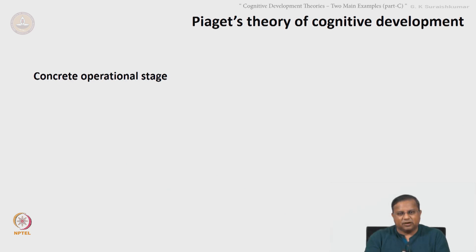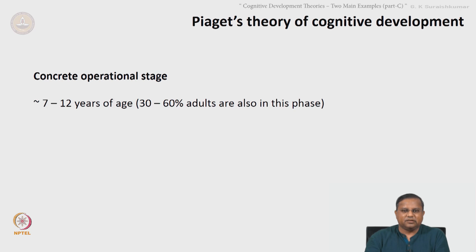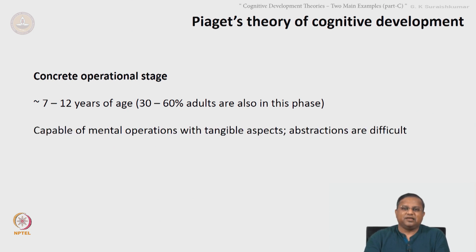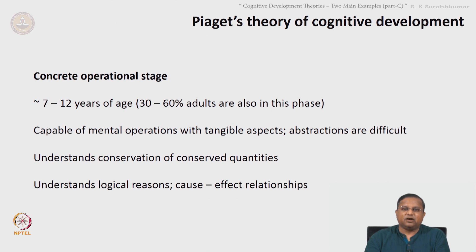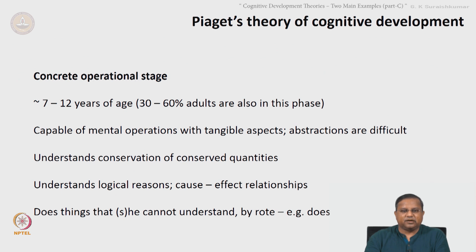The concrete operational stage is a little more relevant to us — the first two were for completeness. This is seven to twelve years of age, and thirty to sixty percent of adults are also in this phase. In this stage, they are capable of mental operations on tangible aspects; abstractions are of course difficult. They understand conservation of conserved quantities, understand logical reasoning and cause-and-effect relationships. They do things they cannot understand by rote — if they are unable to understand something, they switch to a rote method. The approach to mathematics by some students is a very good example of this.